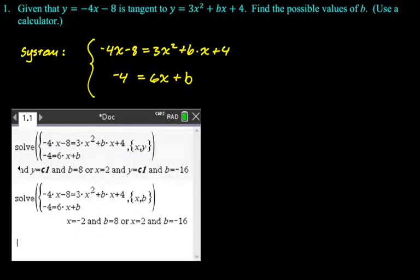This is a calculator problem, so I'm going to let the calculator solve this. When I did this, I did something weird. I initially told it to solve for x and y, and then I got this confusing answer where it was like, y is equal to c1. I was like, what is happening here? Then I realized, really, in my system, there is no y in the system. So when I asked it to solve for x and y, it was like, y can be anything. Who cares? So then I resolved it using x and b, and it's telling me that x should be negative 2. When x is negative 2, b is 8. Or x could be positive 2, and when x is positive 2, b is negative 16.